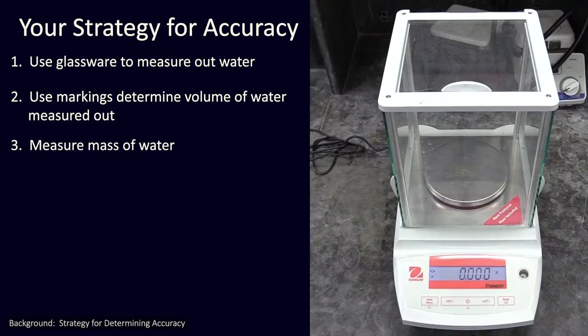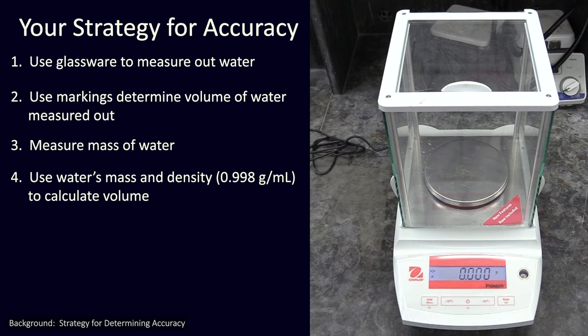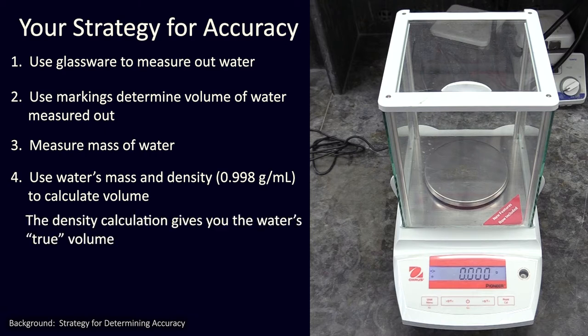You'll then use a scale like this one to measure the mass of the water you dispense, then use the density of water, 0.998 grams per milliliter, to calculate the volume of water you dispensed. Now these scales you'll be working with have been checked and evaluated to give you accurate mass readings, so you can assume the volumes you calculate will be highly accurate. Therefore, you will know the actual true volumes of water you measure out.